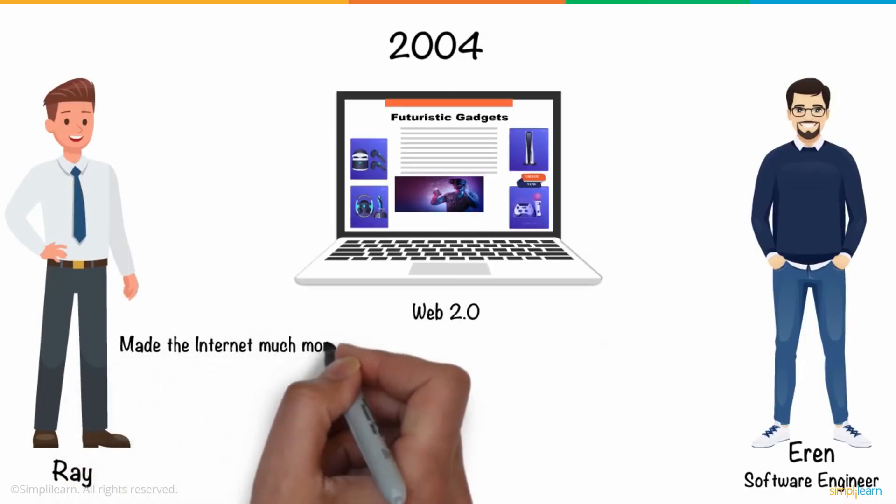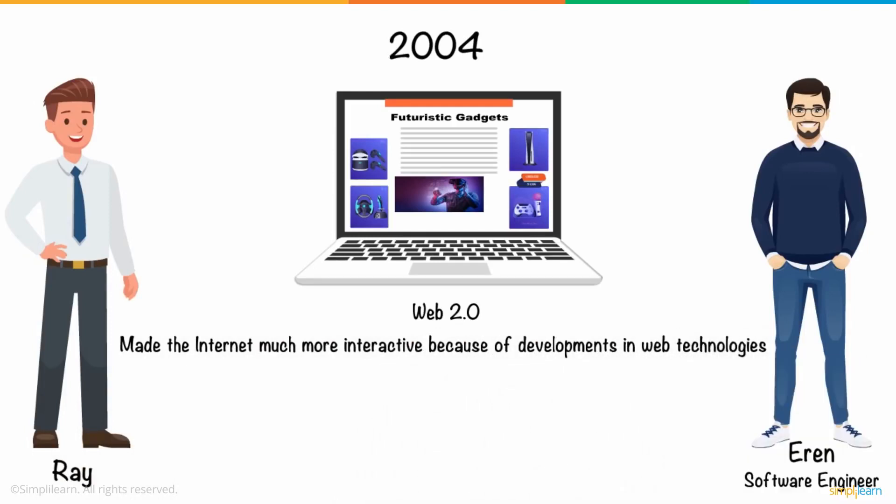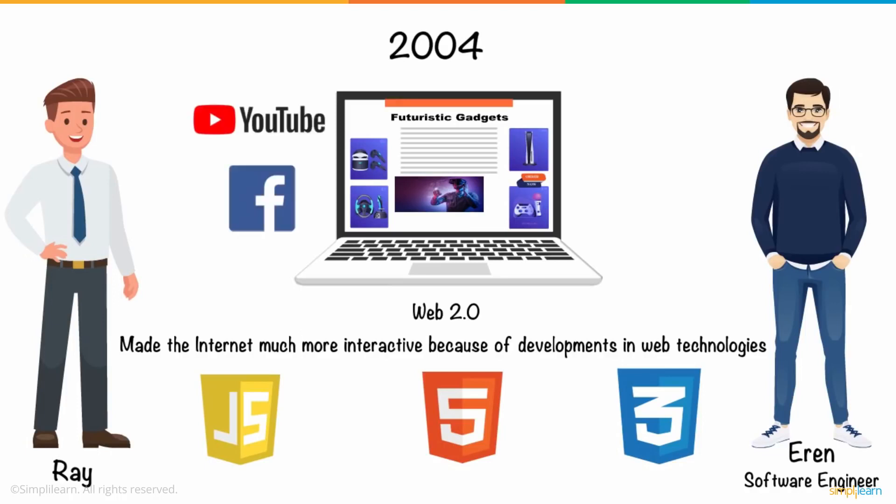Web 2.0 made the internet much more interactive because of developments in web technologies such as JavaScript, HTML5, CSS3, and others, which allowed companies to create interactive web platforms like YouTube, Facebook, Wikipedia, and many more.